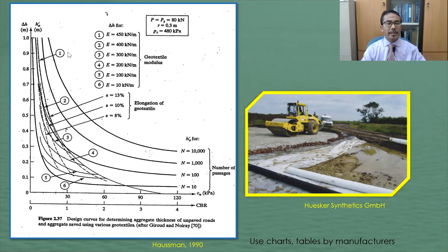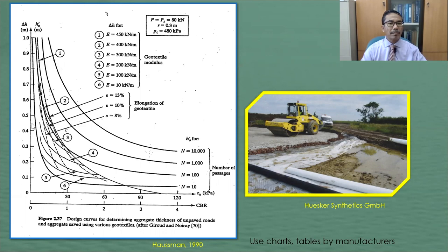Curve number 1 represents a geotextile with modulus E equals 450 kN per meter, number 2 is 400 kN per meter, and so forth for curves 3 through 6, each representing decreasing modulus values.